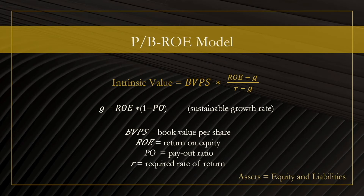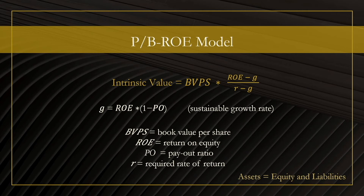While there are formulas to estimate a required rate of return, these formulas have one big shortcoming: they cannot take into account an investor's own risk appetite. A higher required rate of return will make companies look less valuable and less attractive, hence you will be less likely to buy them. In contrast, a lower required rate of return will boost the results, making companies look better and encouraging you to buy more. In this presentation, we will be using a required rate of return of 6.42%.